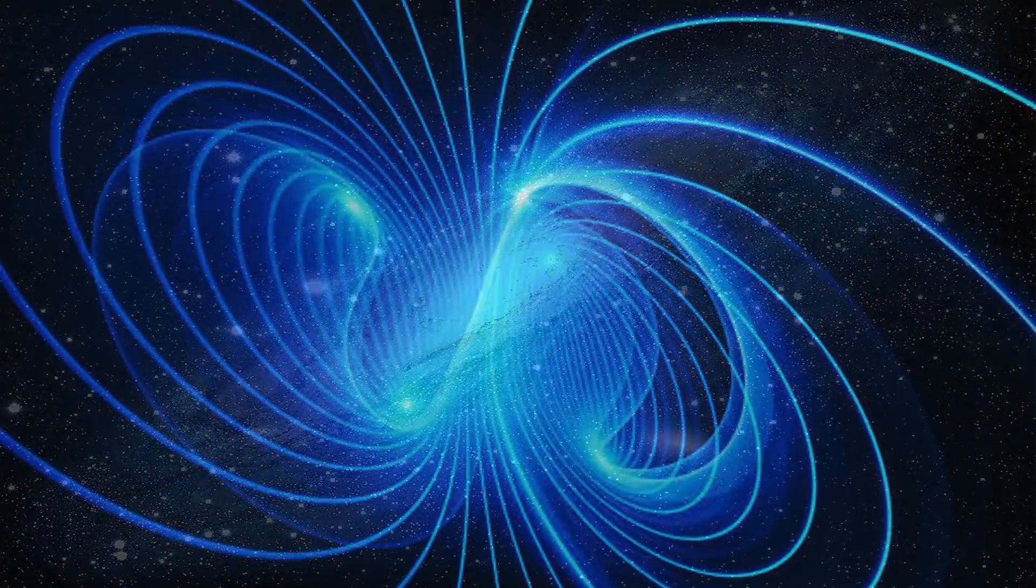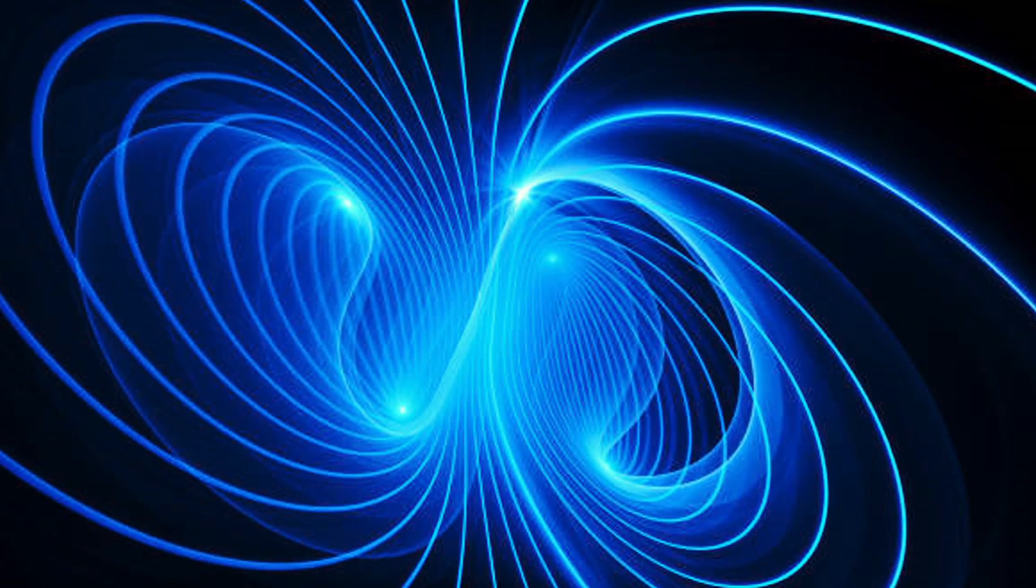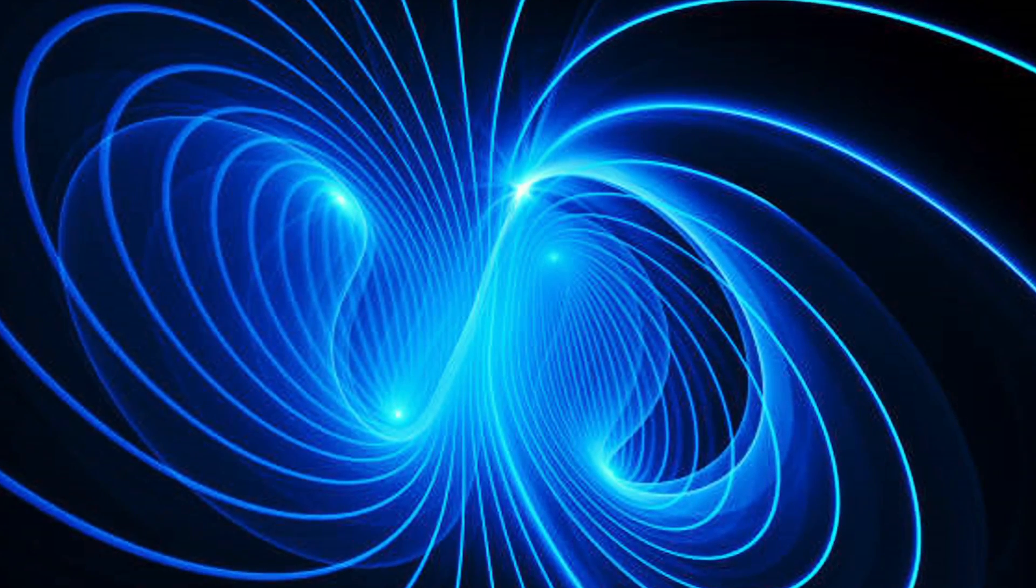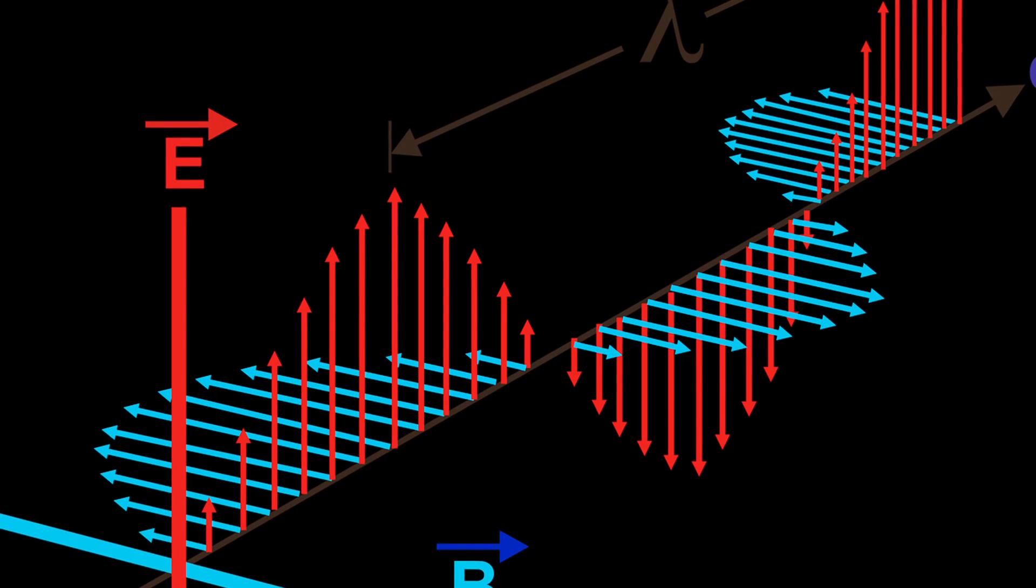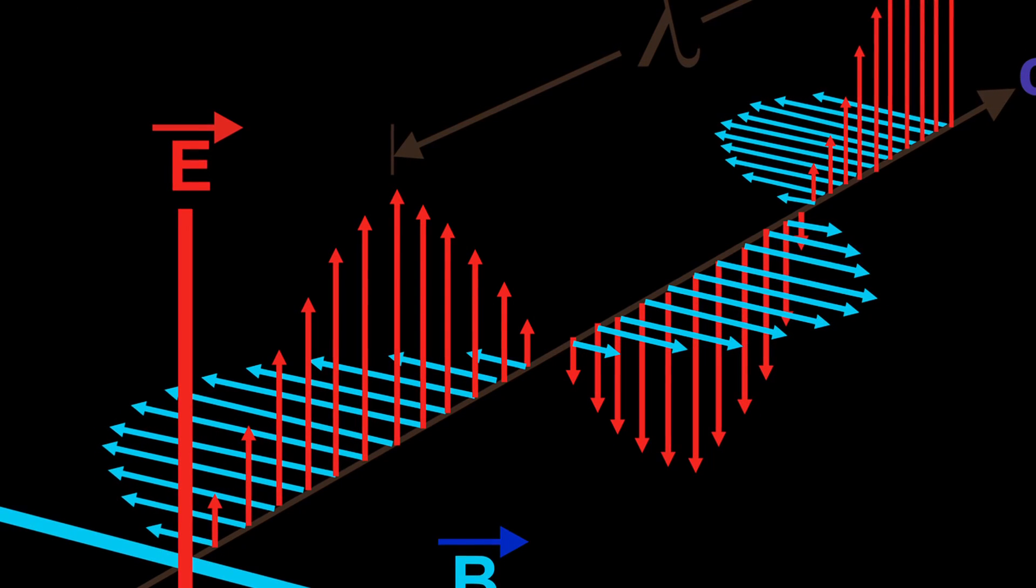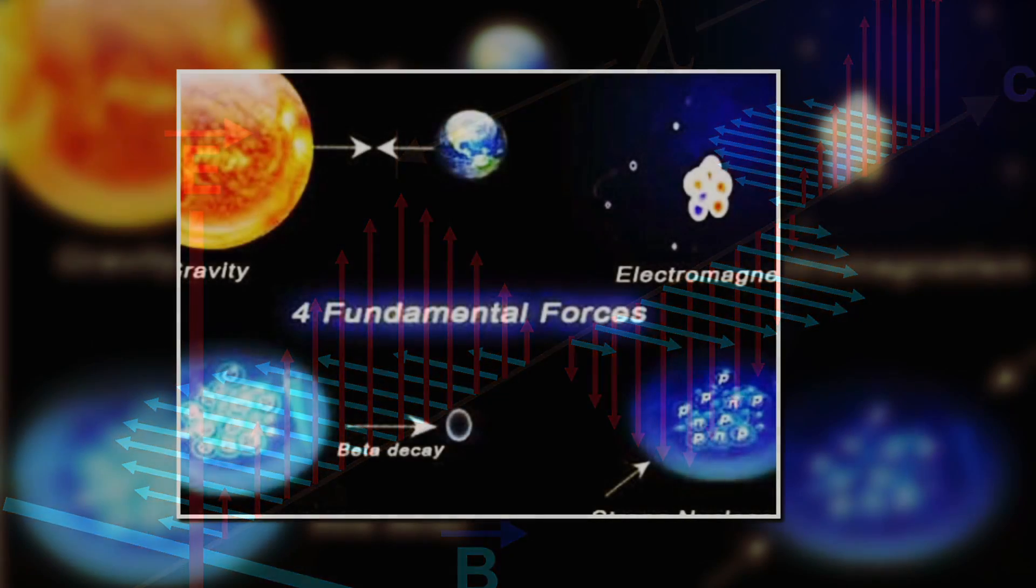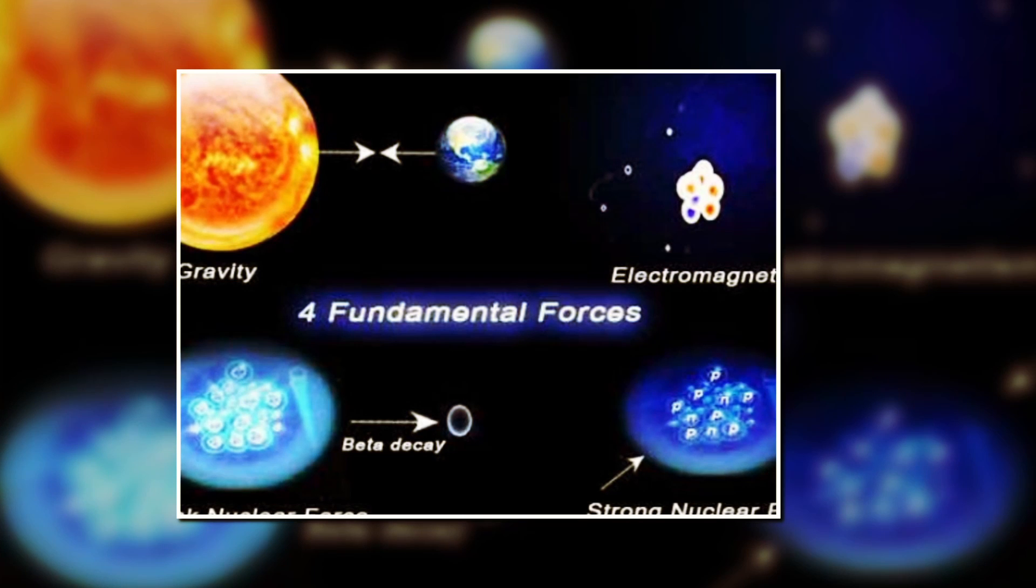Electromagnetism is a branch of physics which studies the interaction between electrically charged particles and the electromagnetic field. This field is composed of electric and magnetic fields, which are intertwined and independent. Electromagnetism is one of the fundamental forces of nature, along with gravity, the strong force, and the weak force.